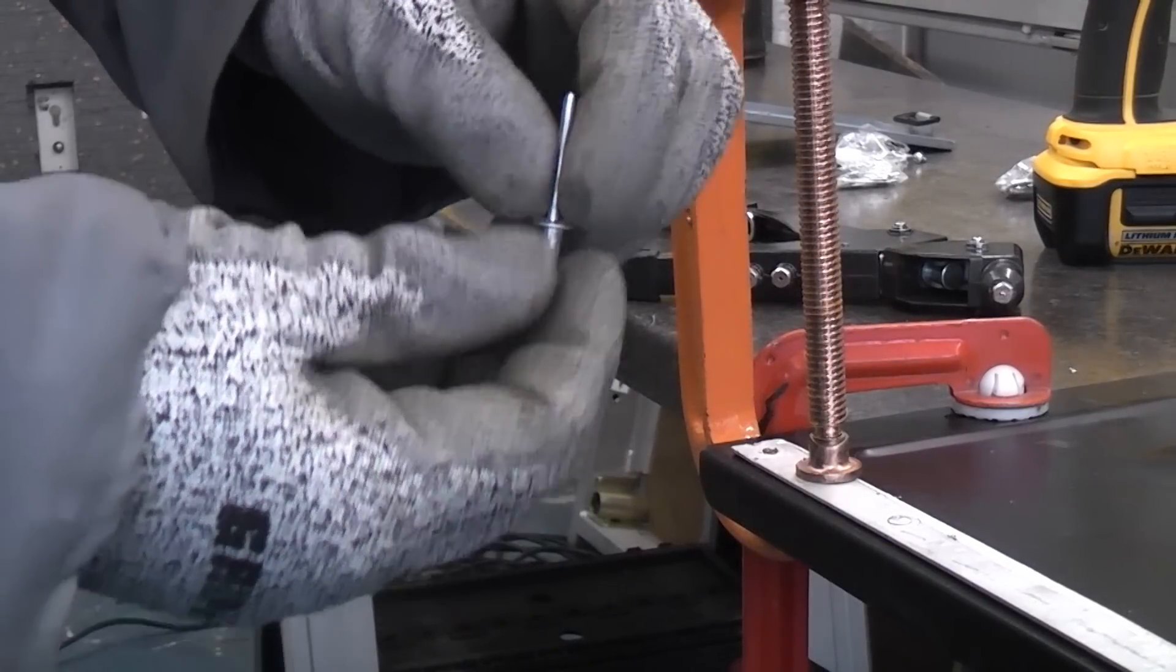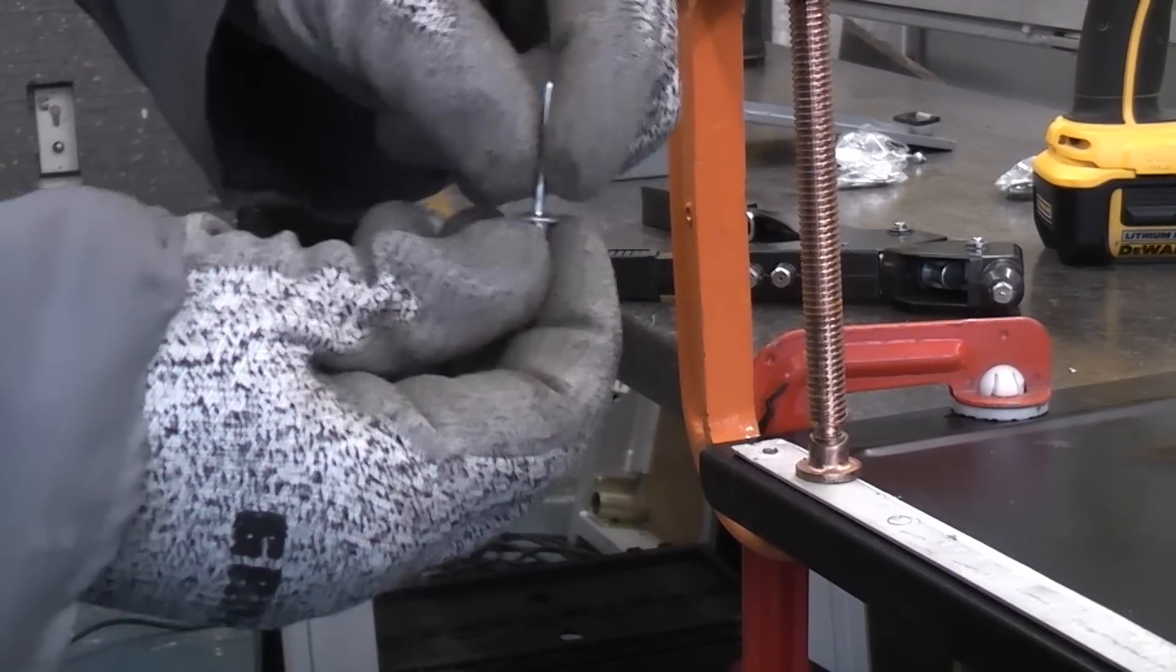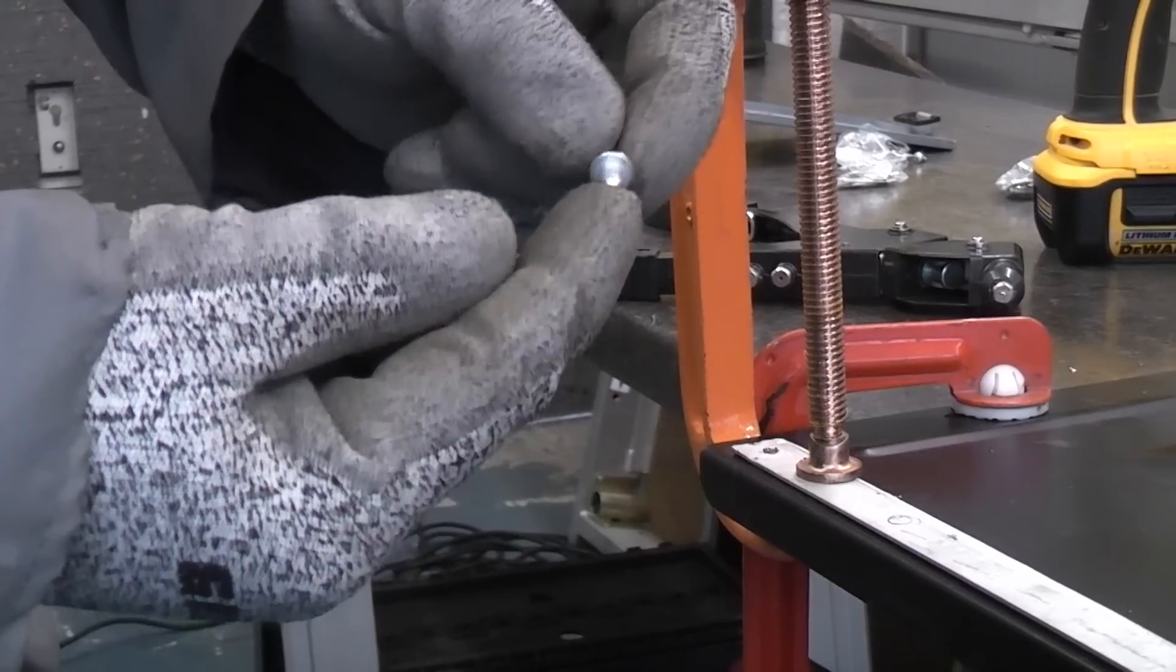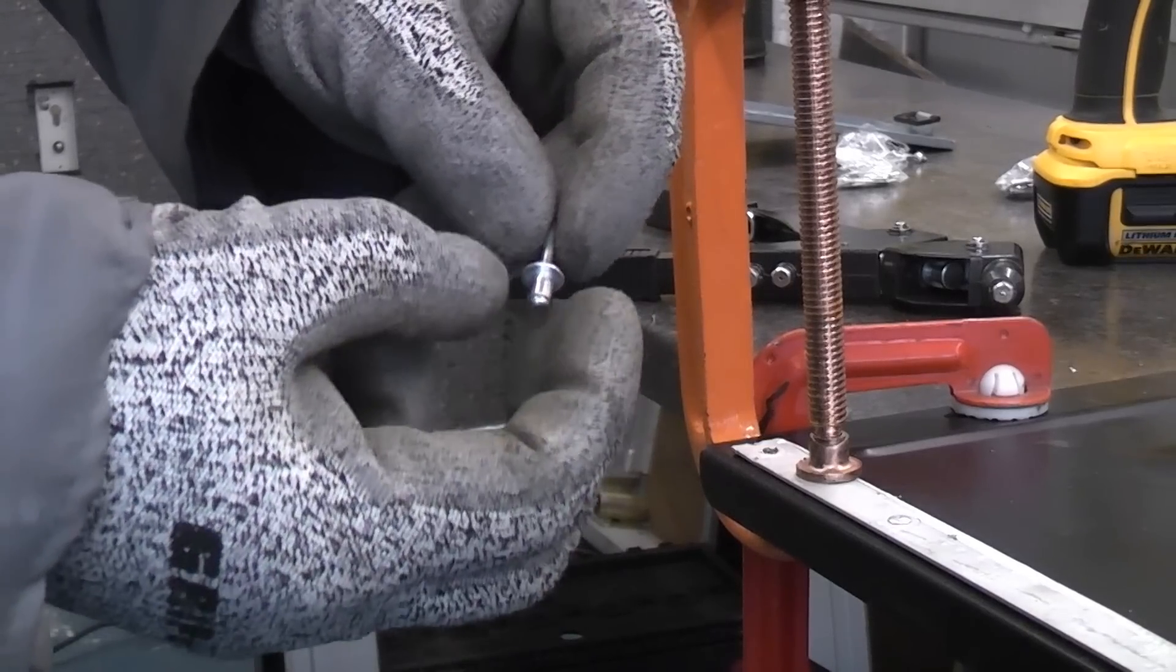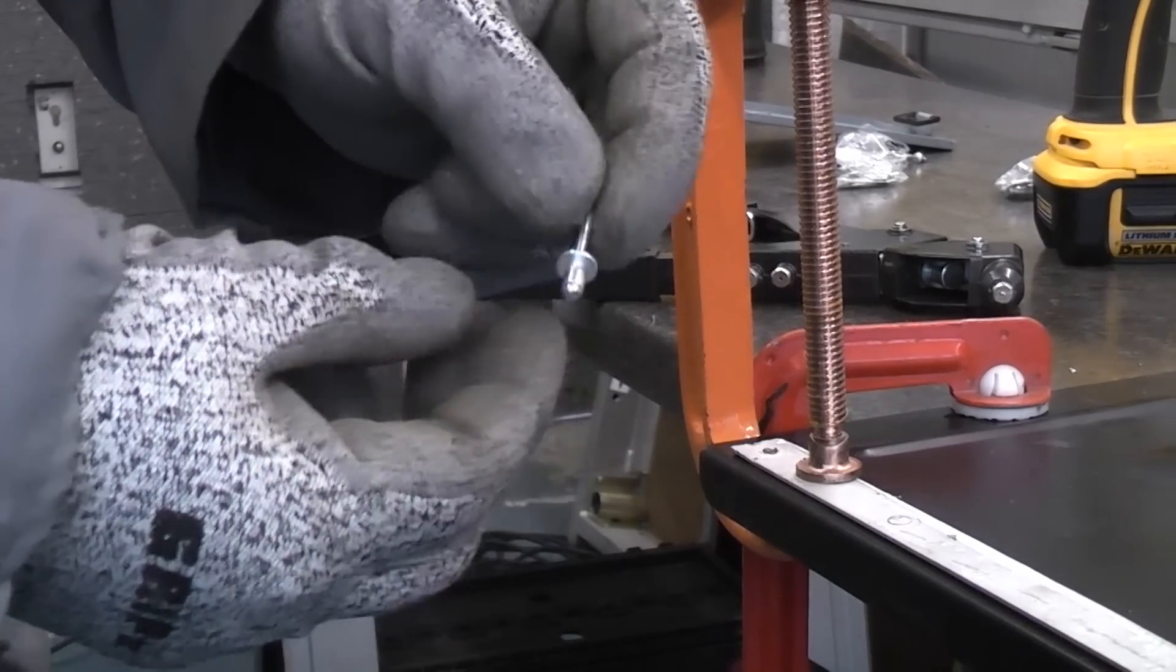So when you put that in the gun and you squeeze the levers it pulls this metal mandrel up which pulls that mushroom head through the rivet causing it to upset, which makes it expand. And that actually grips it.